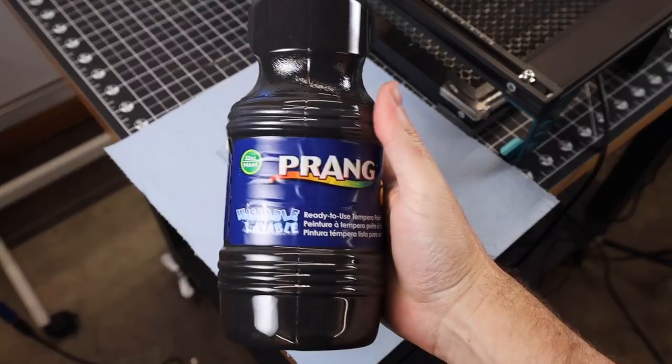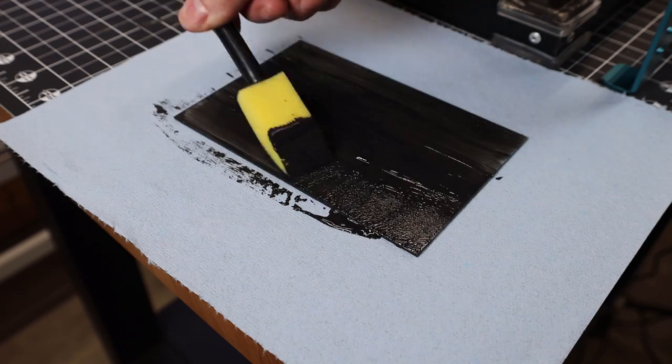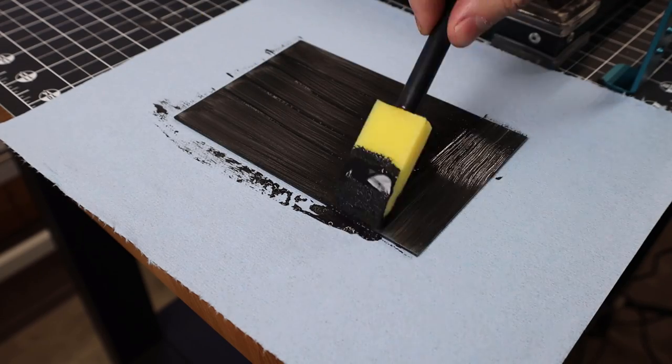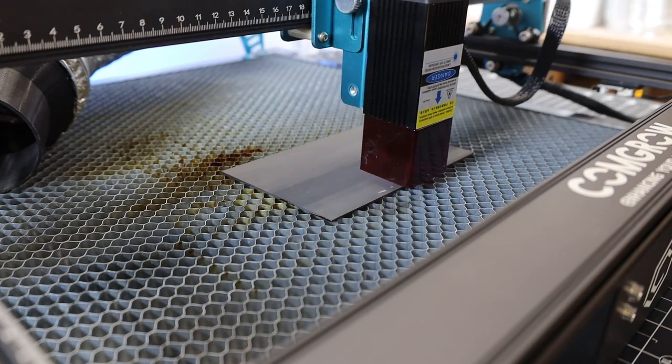I'm going to use some water-washable paint and just kind of paint it on. And when brushing stuff on like this, it's going to leave lines, which will actually show up in your engraving on this. So if you're needing everything to be as smooth as possible, I suggest a spray paint.